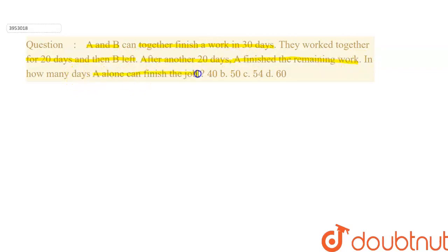A alone can finish the job. Options are 40, 50, 54, or 60. So, this question says that A and B, both of them are doing some work in 30 days.